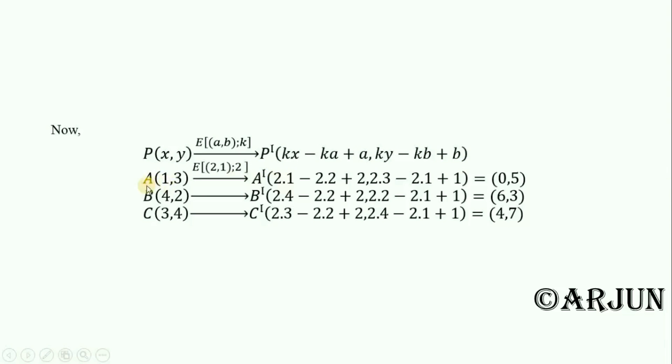Then by using this formula, image of (1,3), A will be A prime: 2 into 1 minus 2 into 2 plus 2. Here K equals 2, X equals 1, minus K equals 2, A equals 2, plus A equals 2.